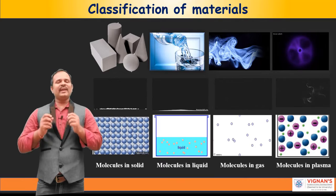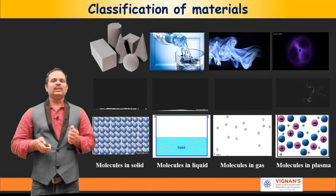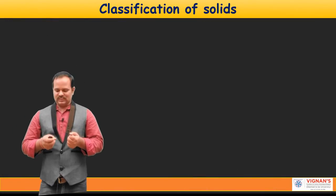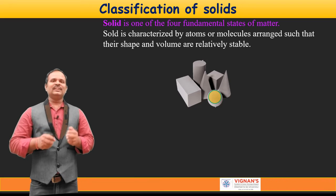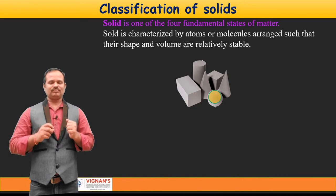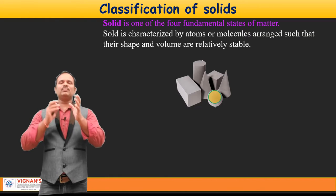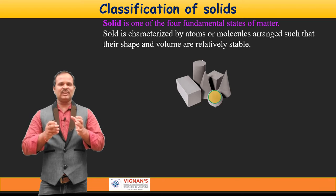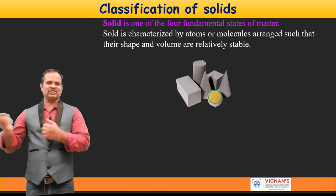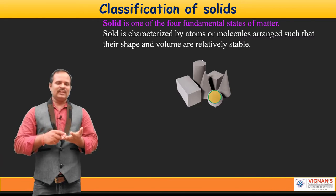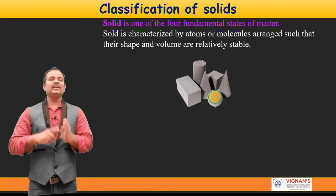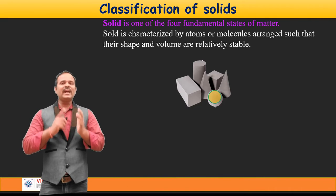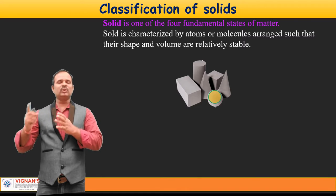However, in this course, we mainly focus on the study of solids. A solid is one of the four fundamental classifications of material, characterized by atoms or molecules arranged such that their shape and volume are fixed and relatively stable. The question is: how are the atoms and molecules in the solid arranged? How the atoms are arranged in a material will play an important role in determining its properties.